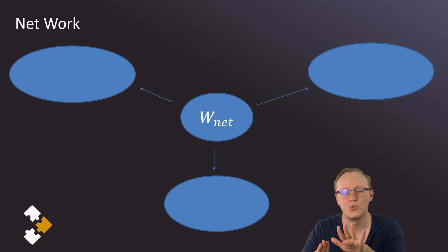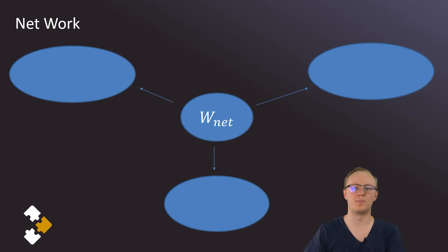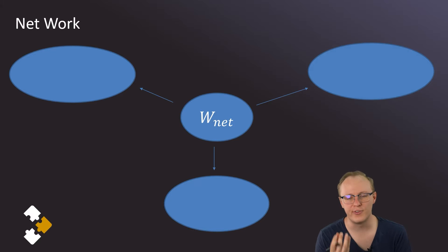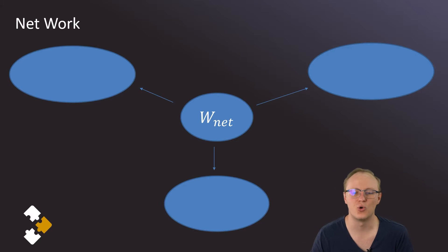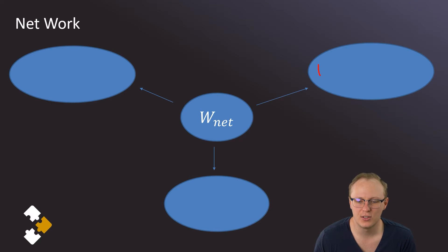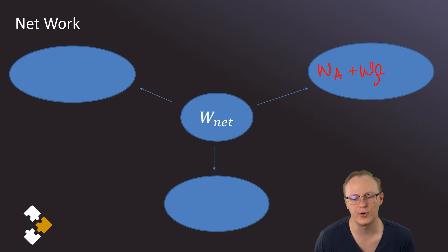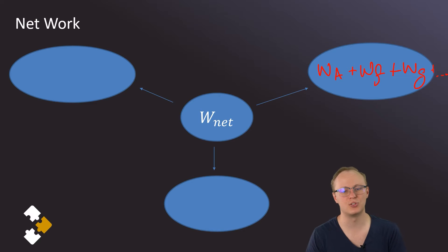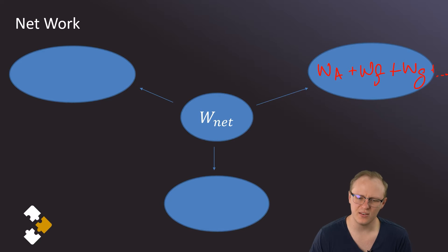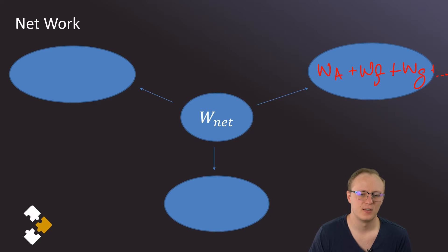Now we can talk about net work. We've already used the very definition of what 'net' means — everything added together. So to find the net work we can take the work done by the applied force plus the work done by the frictional force plus the work done by gravity. If there are other forces doing work — though it's usually these three — you just add them all along.